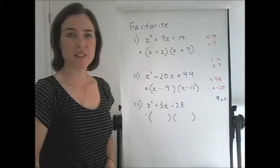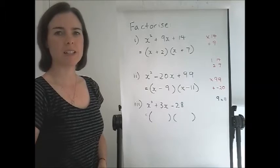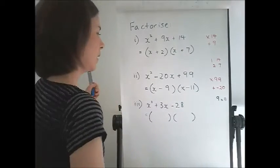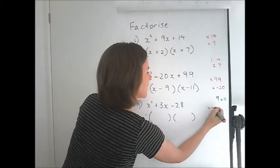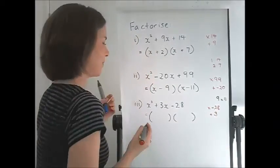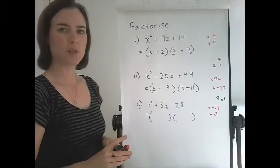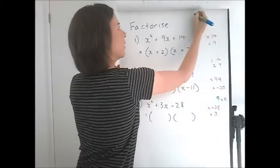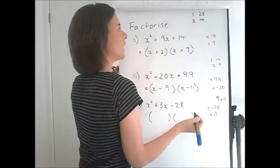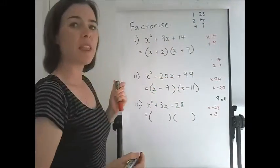Now the next question is factorise x squared plus 3x take 28. We need our numbers to multiply to negative 28 and add to 3. Now what multiplies to 28? We've got 1 times 28, 2 times 14, 4 times 7. That will be all.